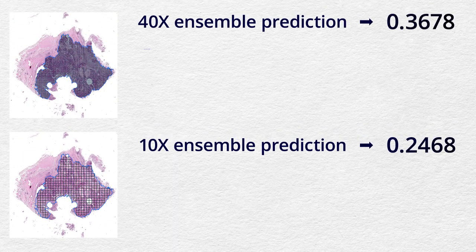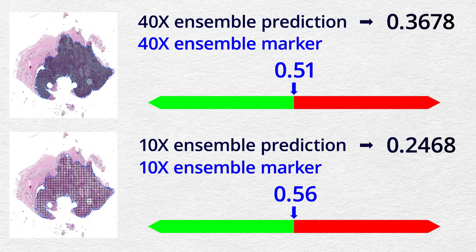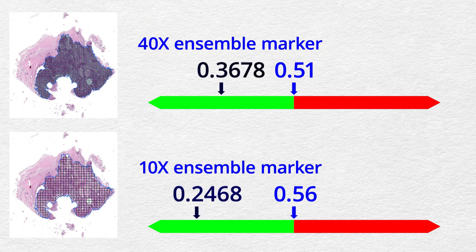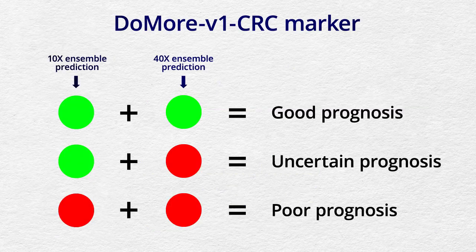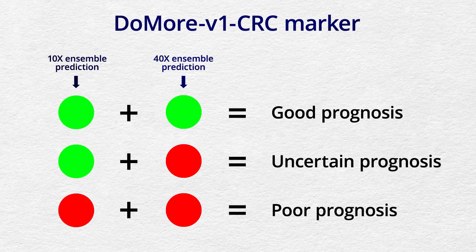A threshold value determined by evaluation during training is used as an ensemble marker to predict either good or poor prognosis. We compare the probability predictions of both resolutions to the respective ensemble marker. The combination, termed the DoMore-v1-CRC marker, predicts good prognosis if both ensemble markers predicted good prognosis.